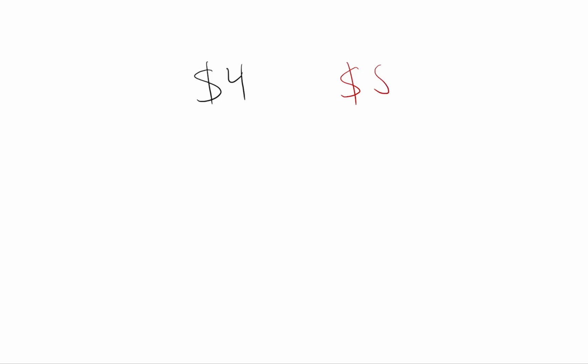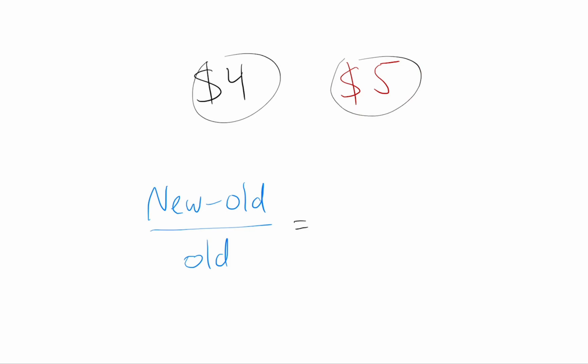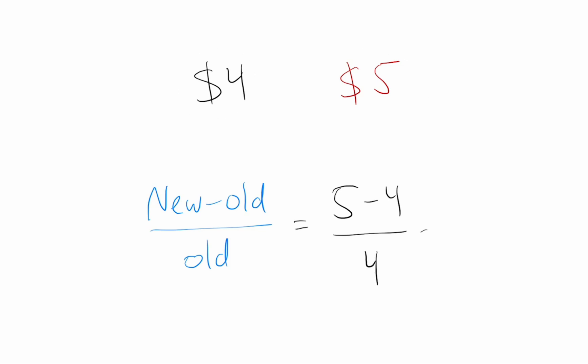First of all, how do you calculate the percent change in anything? Let's say the price of gas is $4 this month, and then next month it's $5, and you want to calculate the percent change. The formula is: percent change equals the new price minus the old price — the difference — divided by the old price. So the numerator is 5 minus 4, which is $1, divided by the old price of $4.